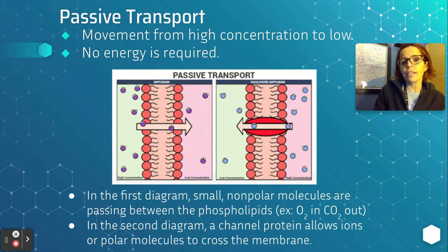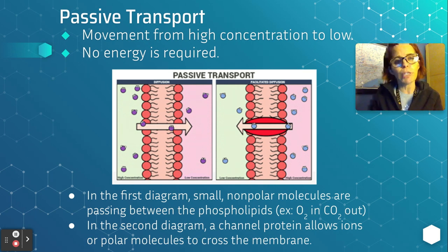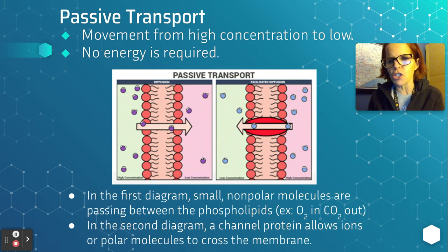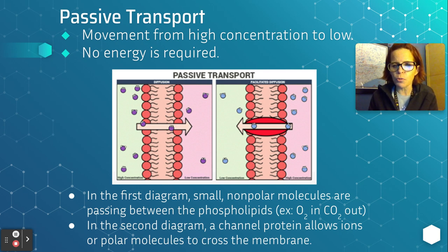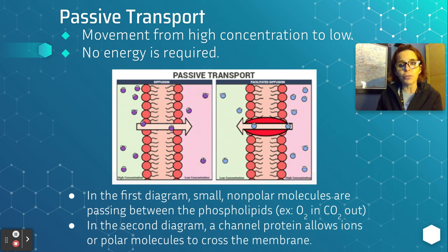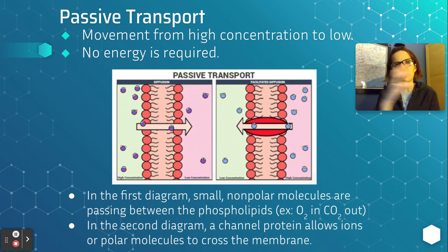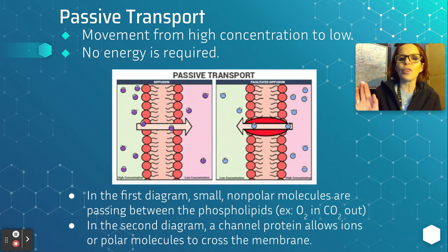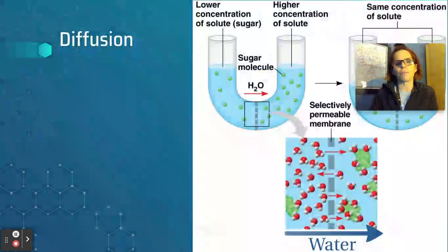On the second diagram, there is a protein facilitating the diffusion — we'll get to that facilitated diffusion. A channel protein — I like to think of a channel as like a tunnel — allows ions that have charges (remember an ion has gained or lost electrons) or polar molecules that have a little bit of a charge to cross the membrane. These membrane proteins act like channels that allow things that are larger, charged, or polar to cross the membrane.